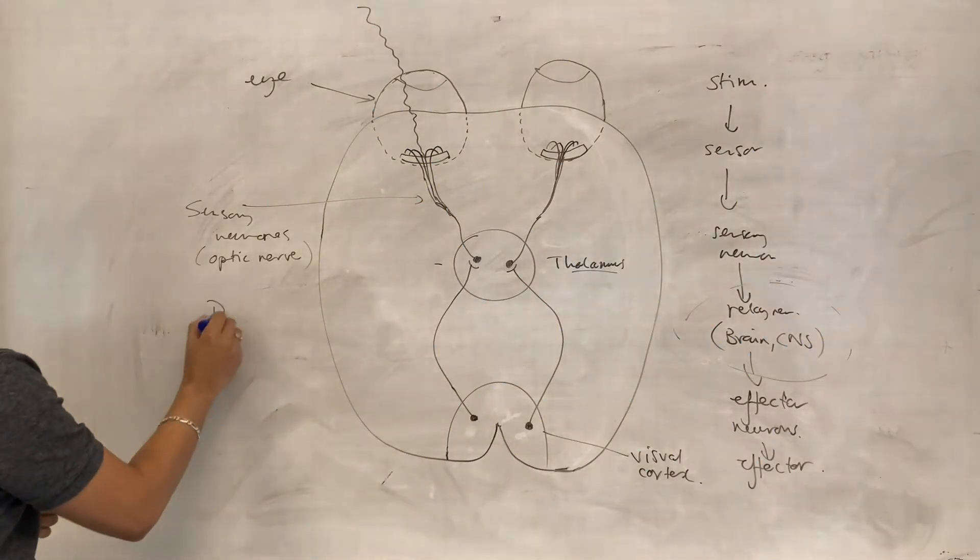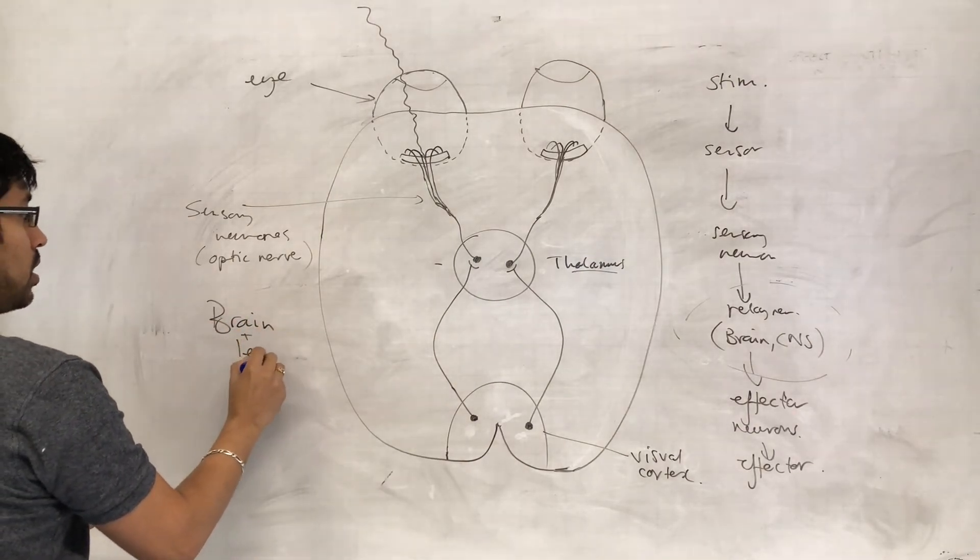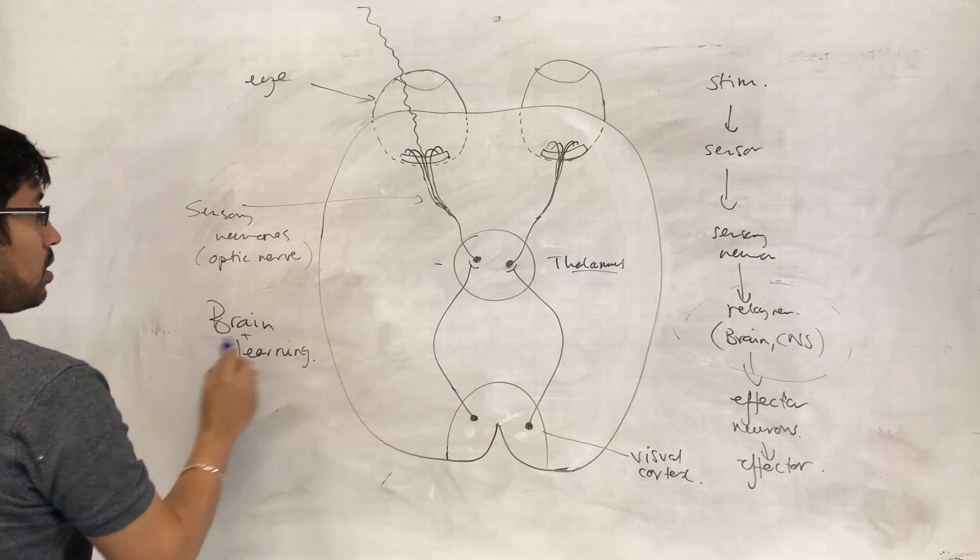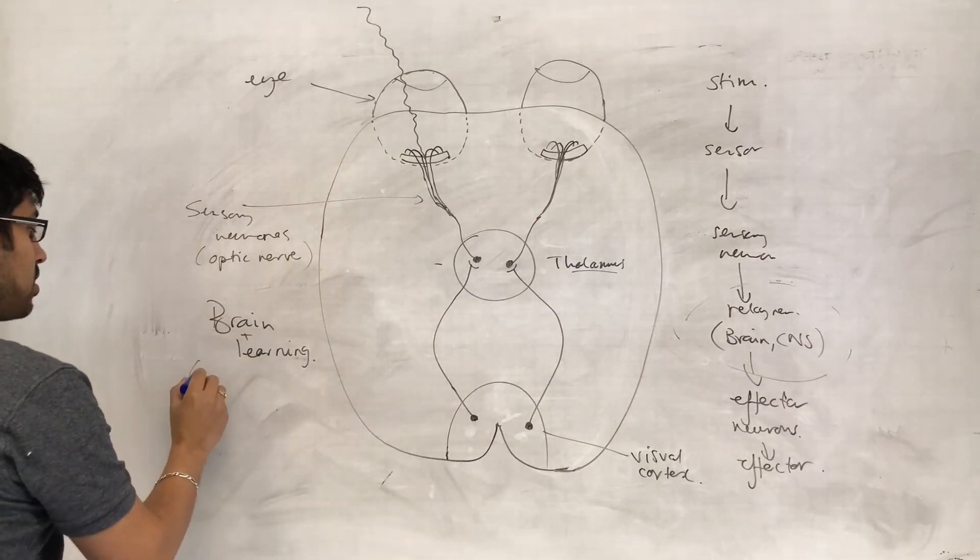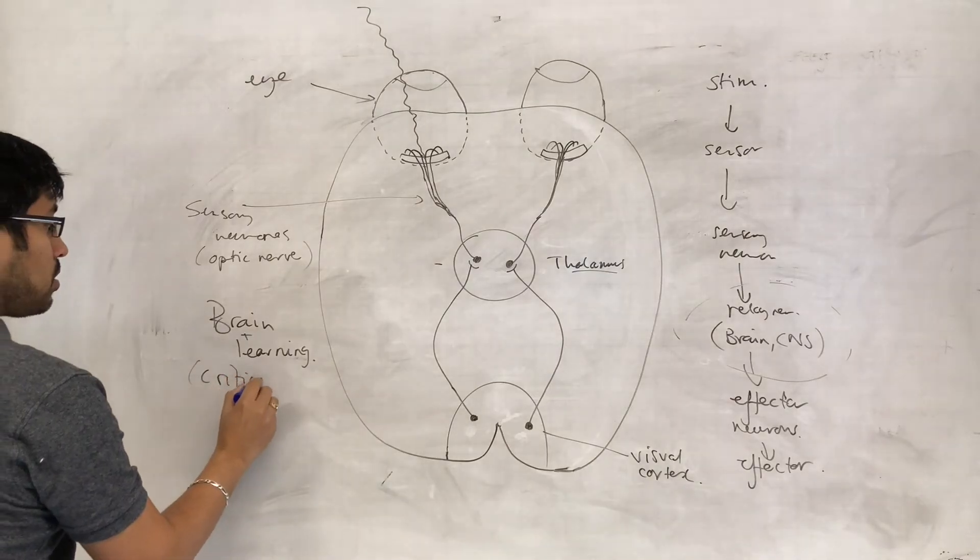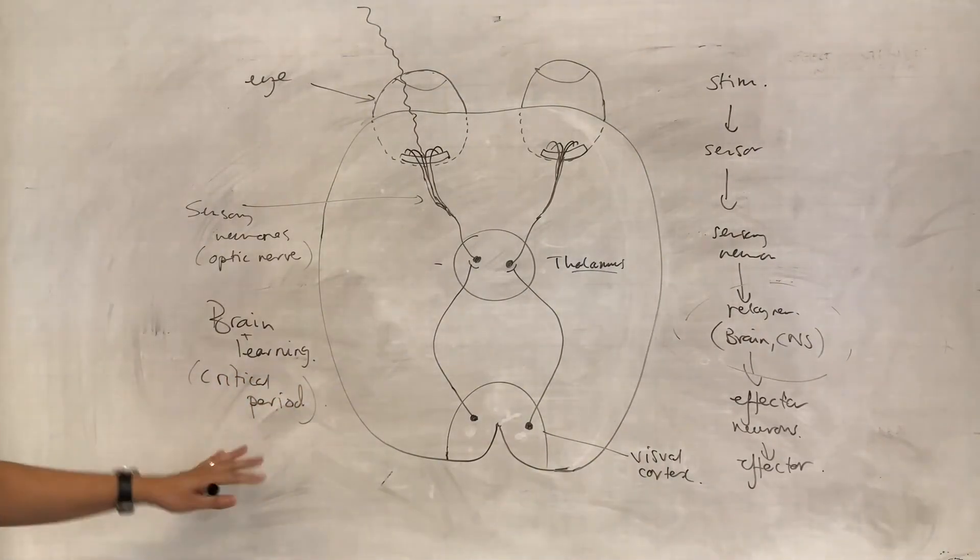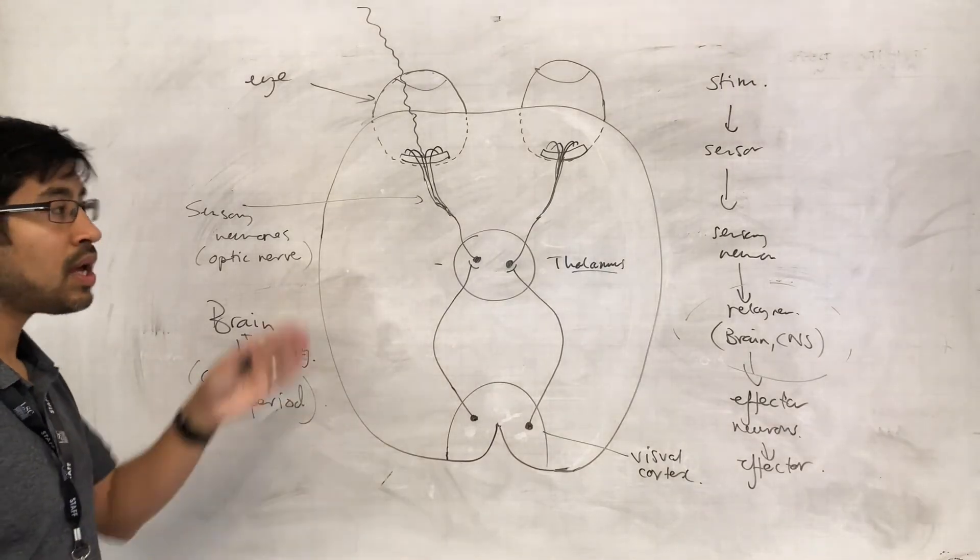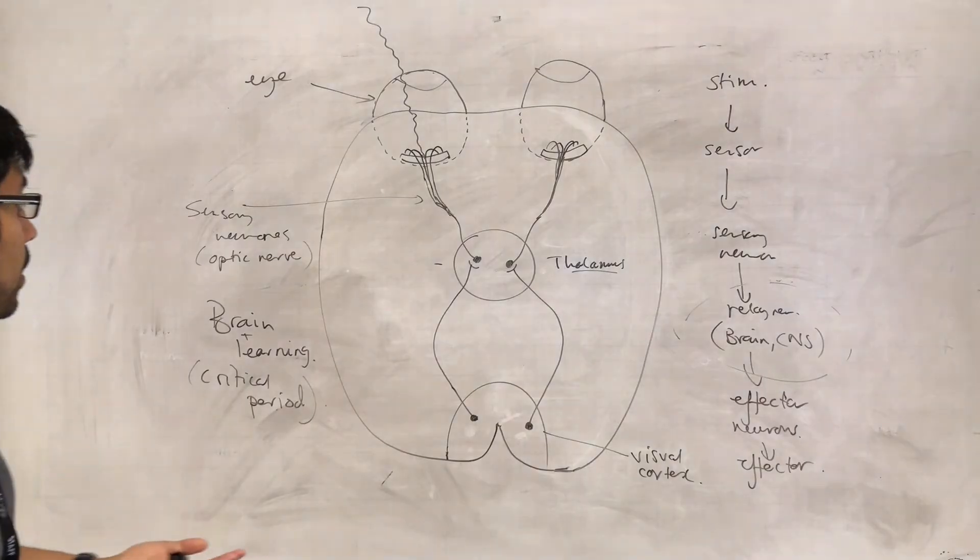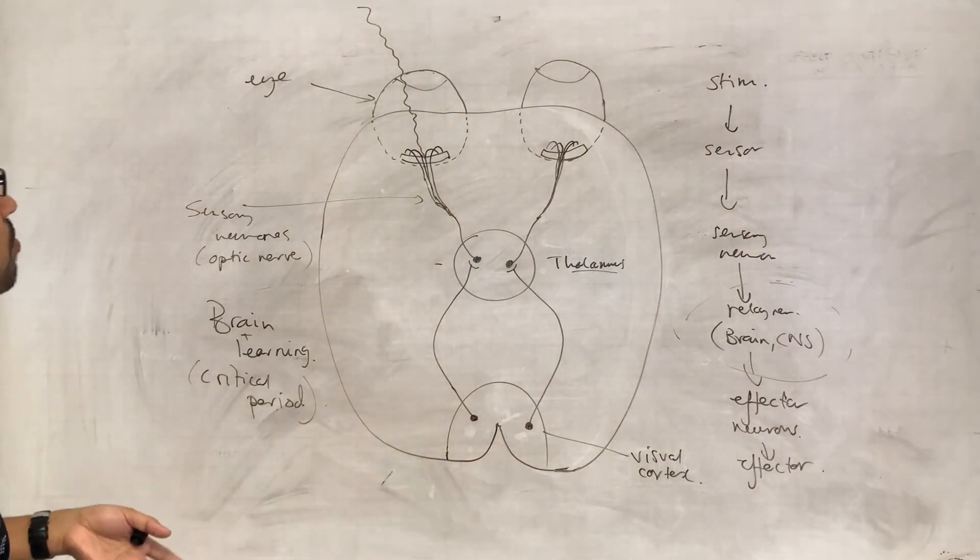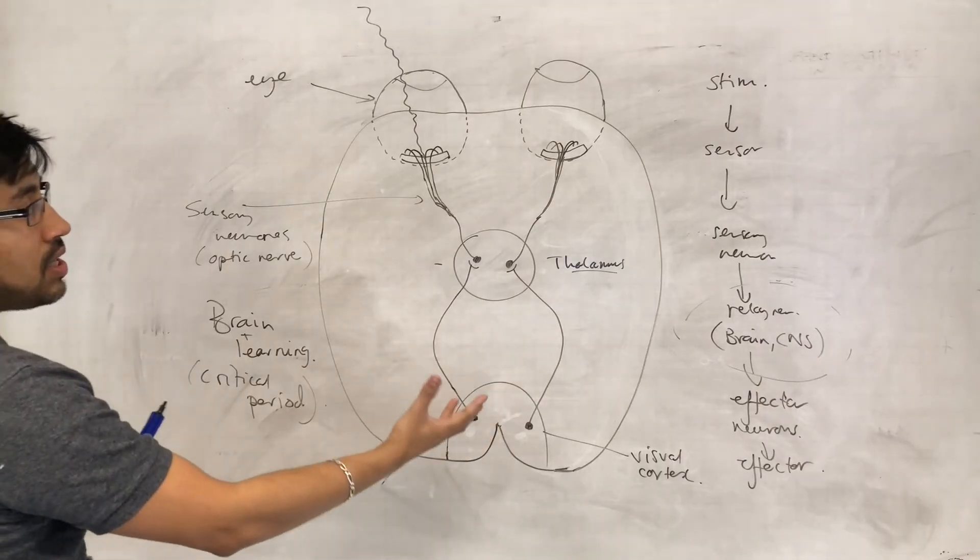So when we are looking at the brain and learning, there's a lot of stuff about the critical period. So it's more to do with the development of the brain. How did these connections develop at the early stage of the organism? The idea being that this kind of connection isn't preformed in the developing organism.